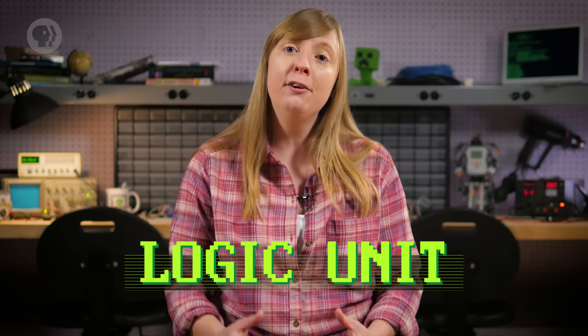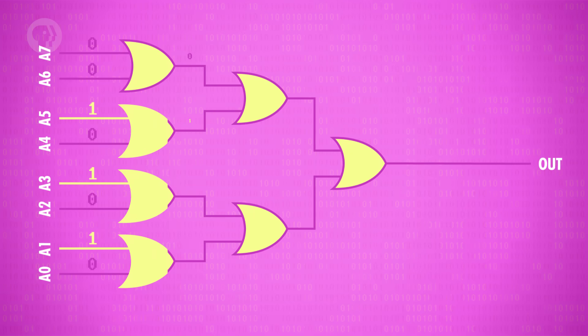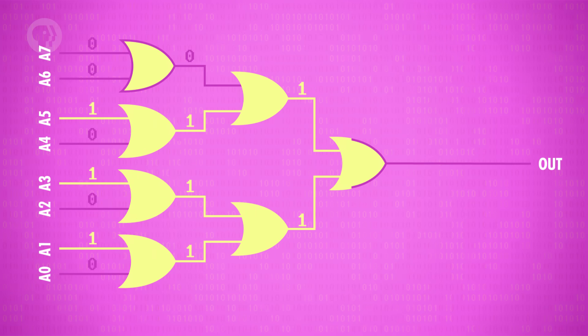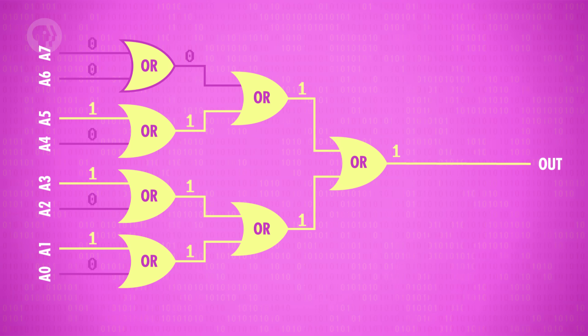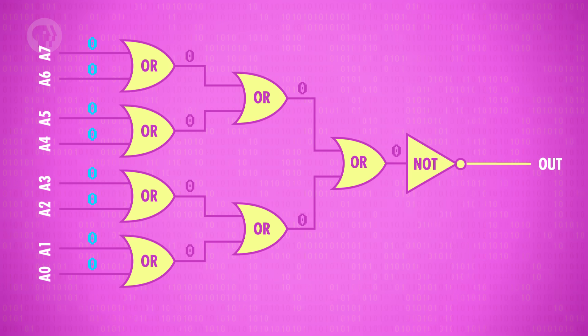Let's move on to the other half of the ALU — the logic unit. Instead of arithmetic operations, the logic unit performs logical operations like AND, OR, and NOT, which we've talked about previously. It also performs simple numerical tests, like checking if a number is negative. For example, here's a circuit that tests if the output of the ALU is zero. It does this using a bunch of OR gates to see if any of the bits are one. Even if one single bit is one, we know the number can't be zero. Then we use a final NOT gate to flip this input, so the output is one only if the input number is zero.